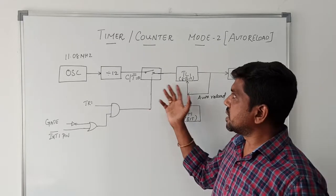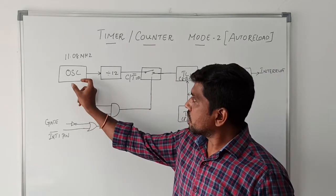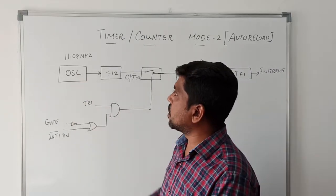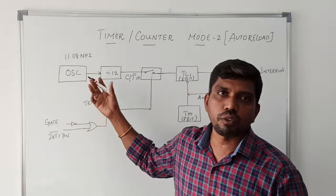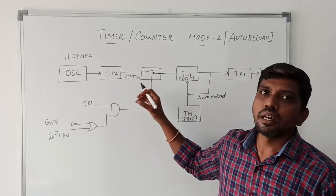We will discuss one by one. The first block is the oscillator block. This oscillator block is mainly used to generate the clock frequency to trigger the different blocks.